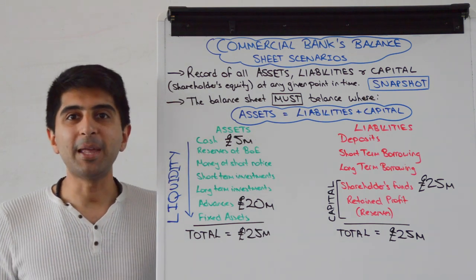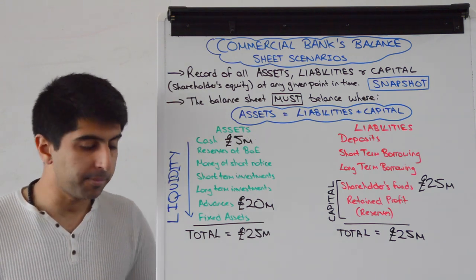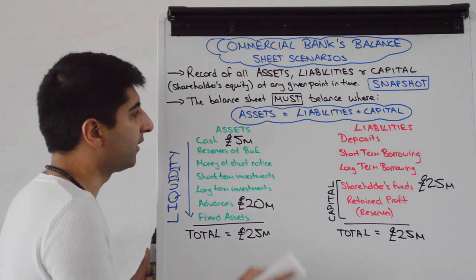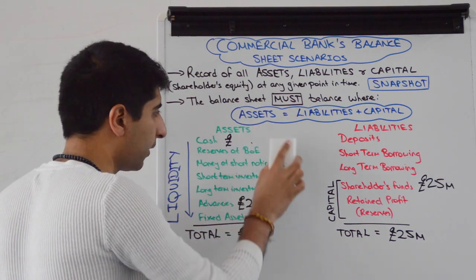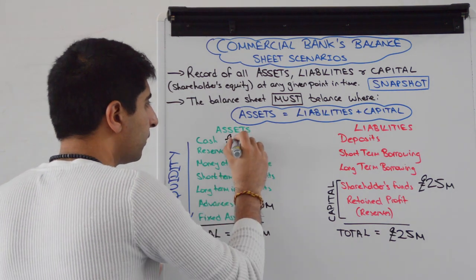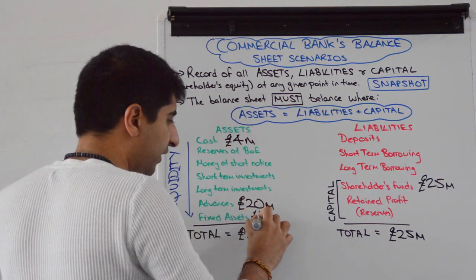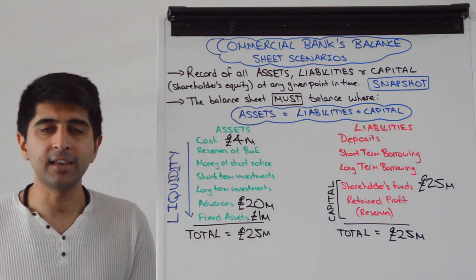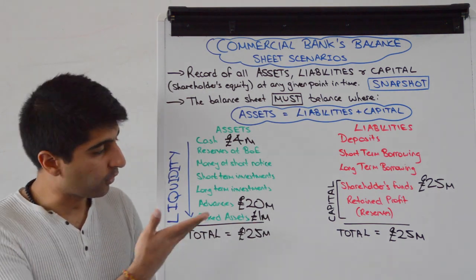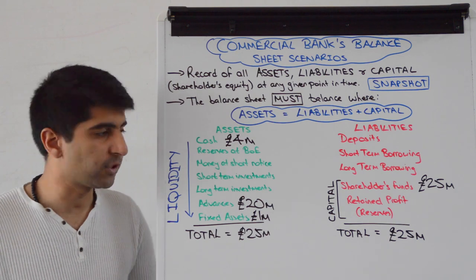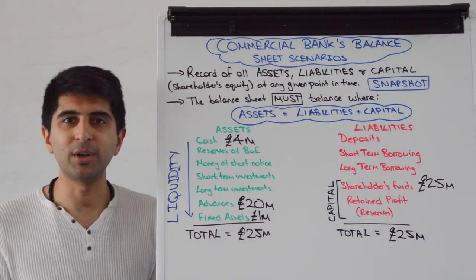A further 1 million pounds is used to buy IT equipment in this bank. It's going to be 1 million pounds off cash — from 5 million pounds down to 4 million pounds — and an entry of 1 million pounds in fixed assets. Remember that fixed assets is made up of things like property and machinery, so IT equipment falls under that category. We have a balanced balance sheet: 25 million and 25 million.